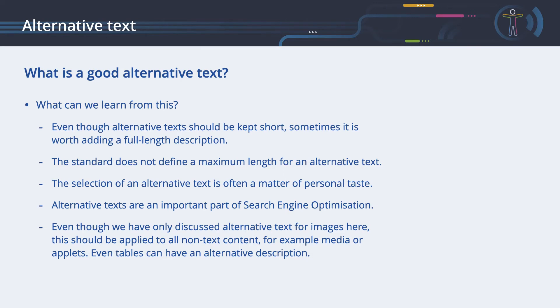Even though we've only discussed alternative text for images here, this should be applied to all non-text content — for example, media or applets. Even tables can have an alternative description.